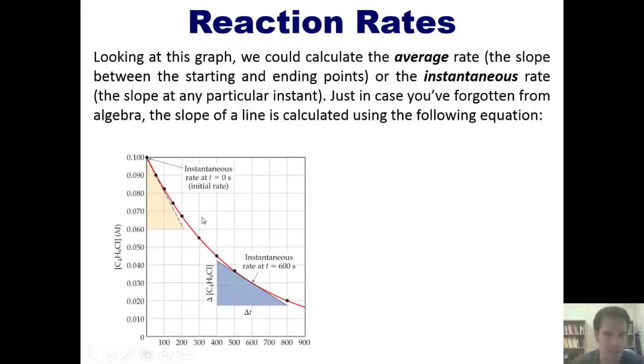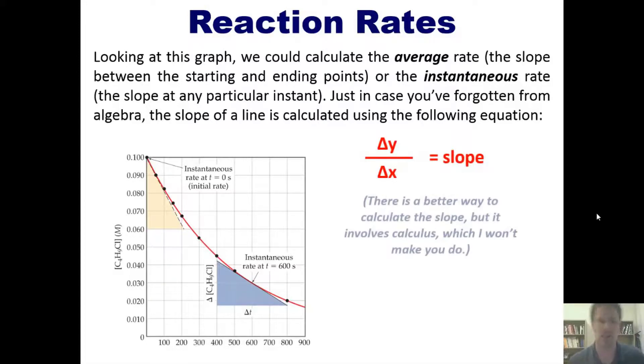That would be done by just calculating the slope at any specific moment between two given points. Now, just in case you've forgotten from algebra, the slope of a line is calculated by using the equation delta y over delta x. There is a better way, of course, to calculate the slope, but that involves calculus, which is not a prerequisite for this course, so I won't make you do it.